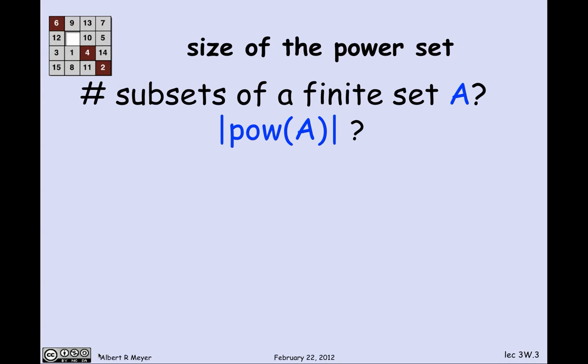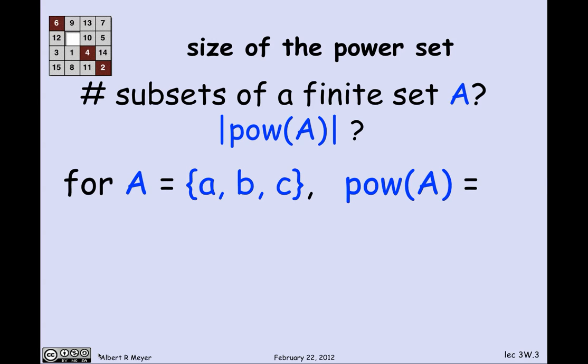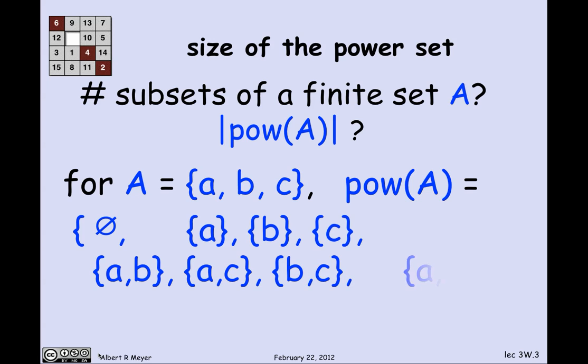Let's use this bijection idea immediately with a nice example. Suppose you want to figure out how many subsets there are of a finite set A — that is, what is the size of the power set of A. If A has elements a, b, c (a set of size 3), then the power set has one subset with no elements, three subsets with one element, three with two elements, and one with three elements, for a total of eight subsets.